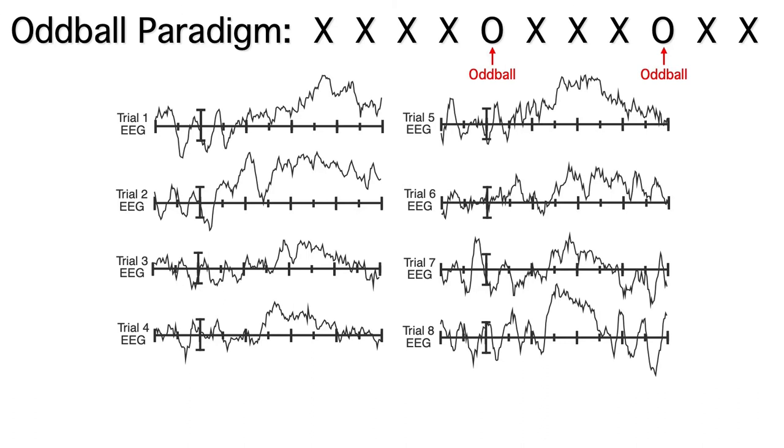This experiment used an oddball paradigm in which subjects pressed one of two buttons on each trial to indicate whether the stimulus was an X or an O. The O's were rare, so we call those the oddball stimuli. Here we're showing the EEG epochs from 8 oddball trials.